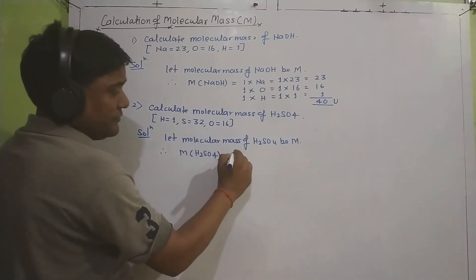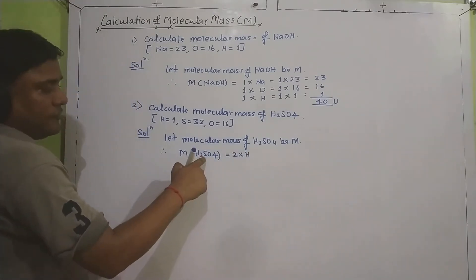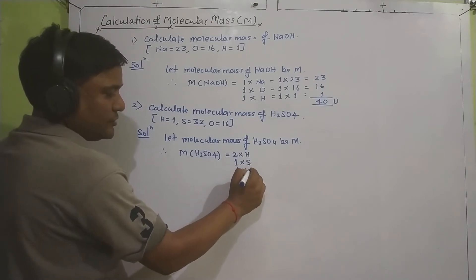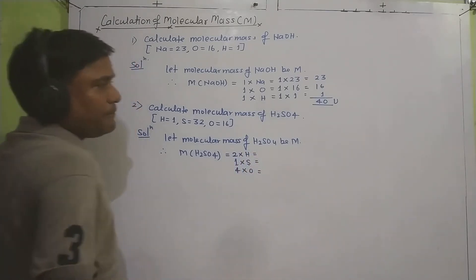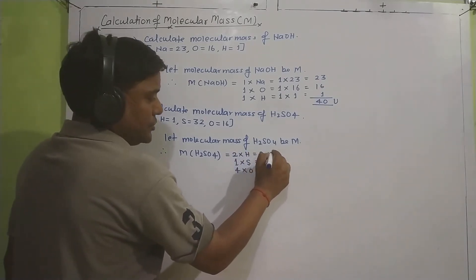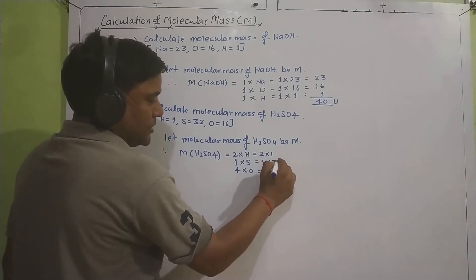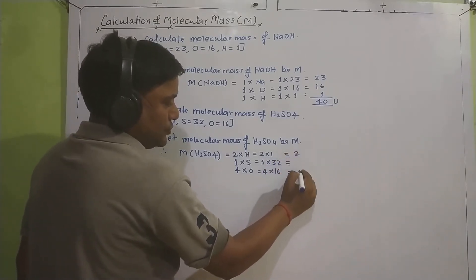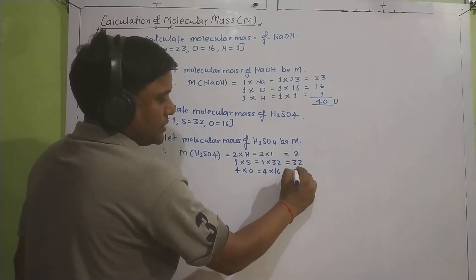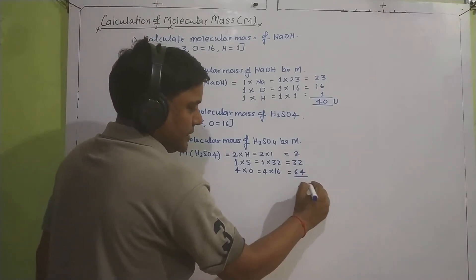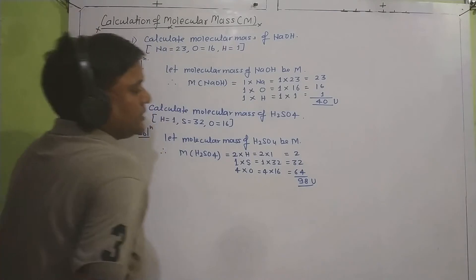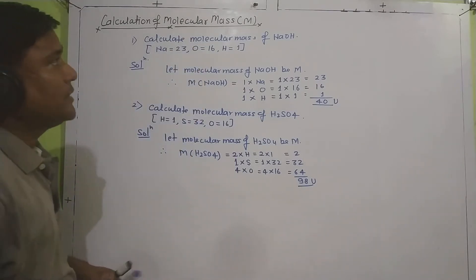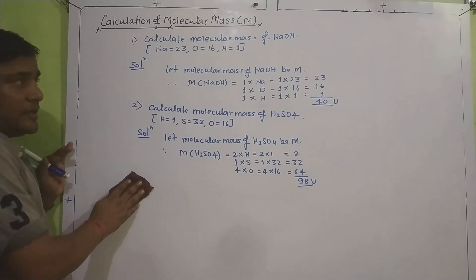M of H₂SO₄ equals: 2 hydrogen, so 2 × H; then 1 sulfur, so 1 × S; then 4 oxygen, so 4 × O. Putting values: 2 × 1 = 2, plus 1 × 32 = 32, plus 4 × 16 = 64. Adding them: 2 + 32 + 64 = 98 units. By this way we can calculate the molecular mass of any substance.